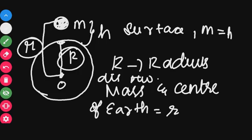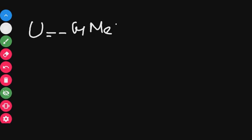What is the gravitational potential energy? We saw the gravitational potential energy in the last video. That is minus G M_E M divided by R, where R is the distance between the mass and the center of the Earth.